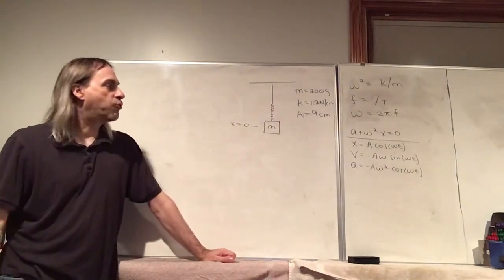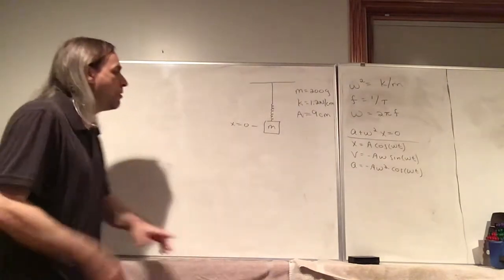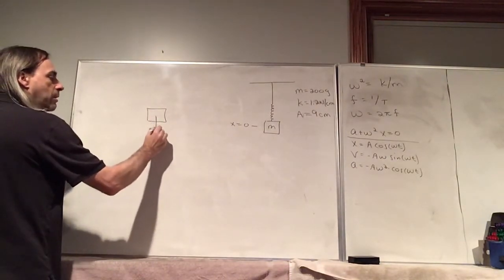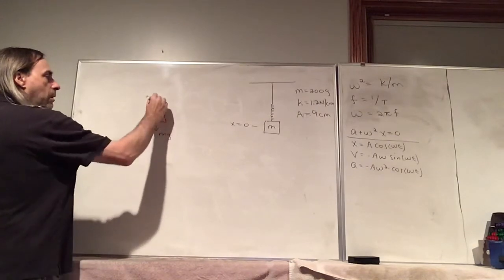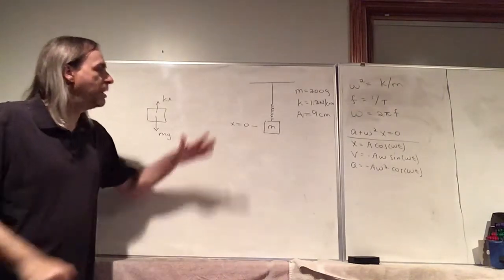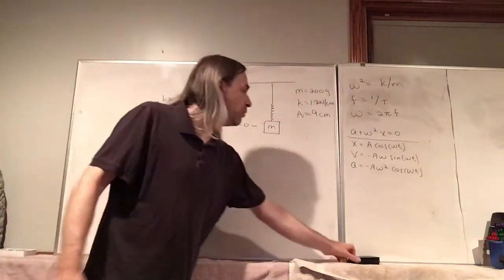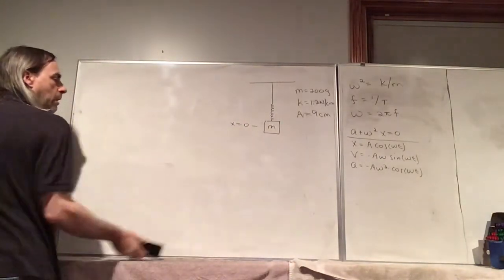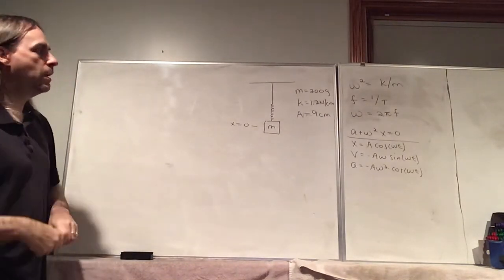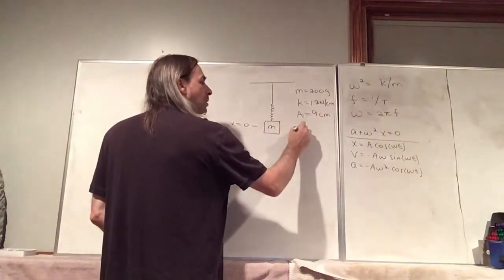The system is at rest at this new equilibrium position. If we pull it, it's going to undergo simple harmonic motion centered at this new equilibrium. Gravity does play a role here — it's not necessarily trivial — but I don't want to go into that. It's in the notes if you want to read it. You can show that gravity's only role is pulling the whole thing down to a new equilibrium position. Most importantly, the first thing you want to do is find the angular frequency.